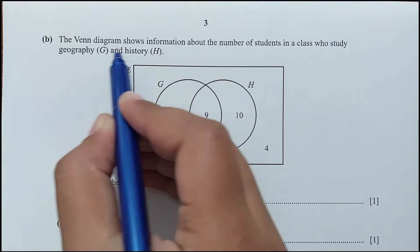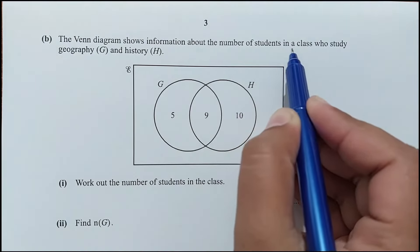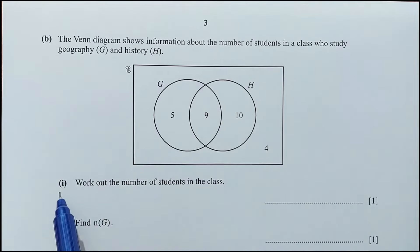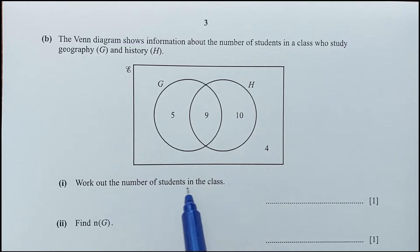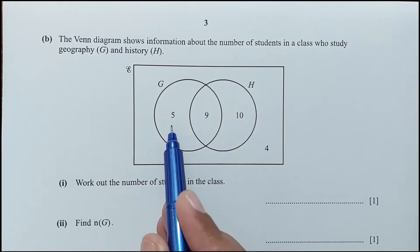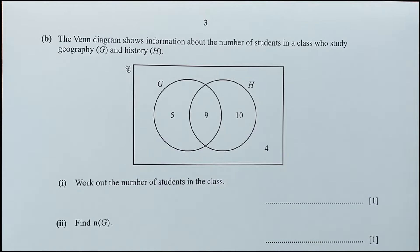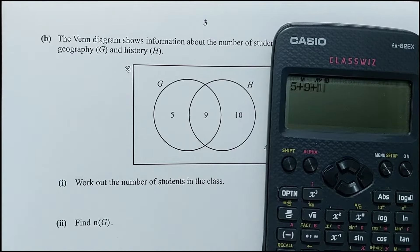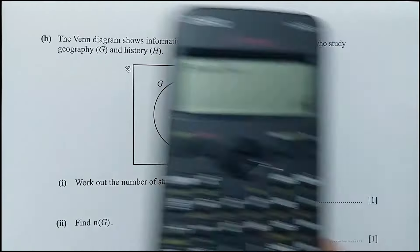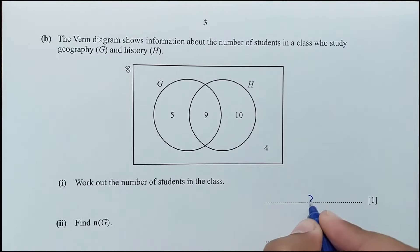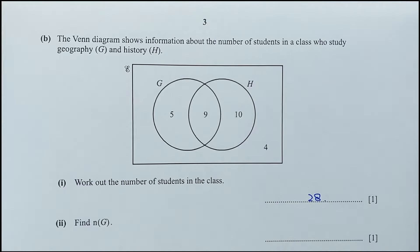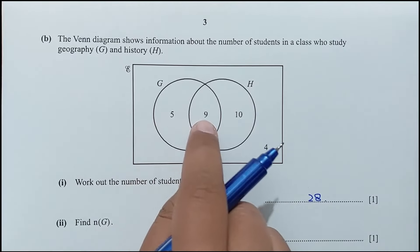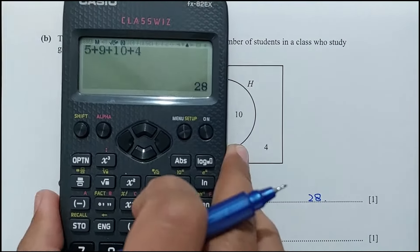For part B, the Venn diagram shows students studying geography G and history H. Part 1: work out the total number of students in the class. Adding 5, 9, 10, and 4 gives 28 students. Part 2: find the number of elements in group G, which is 5 plus 9 equals 14.